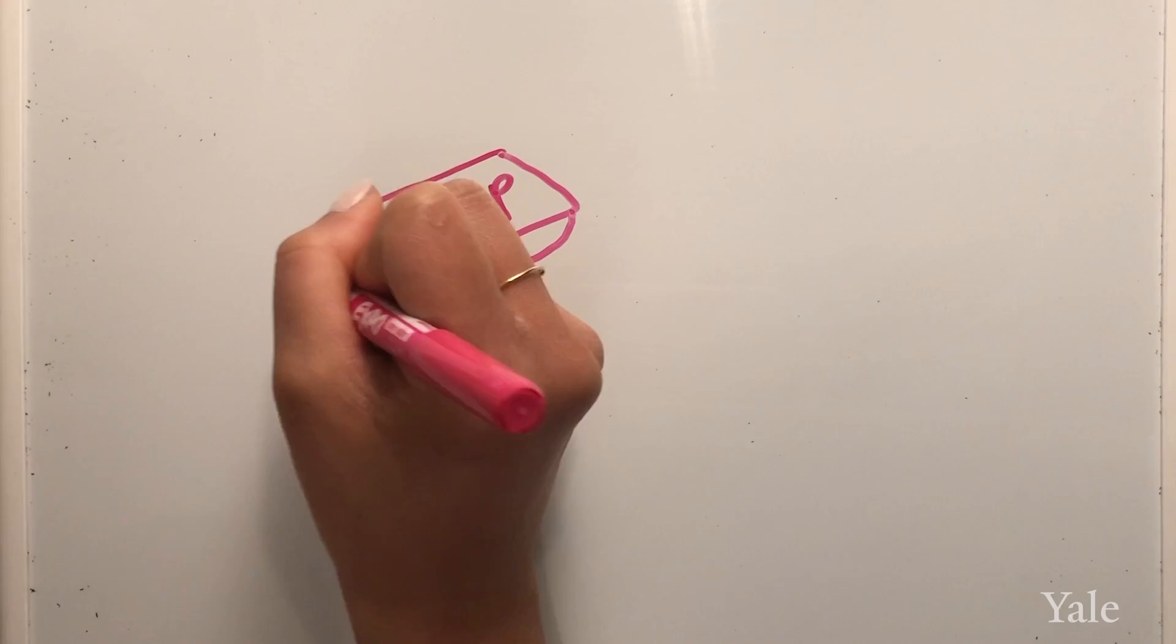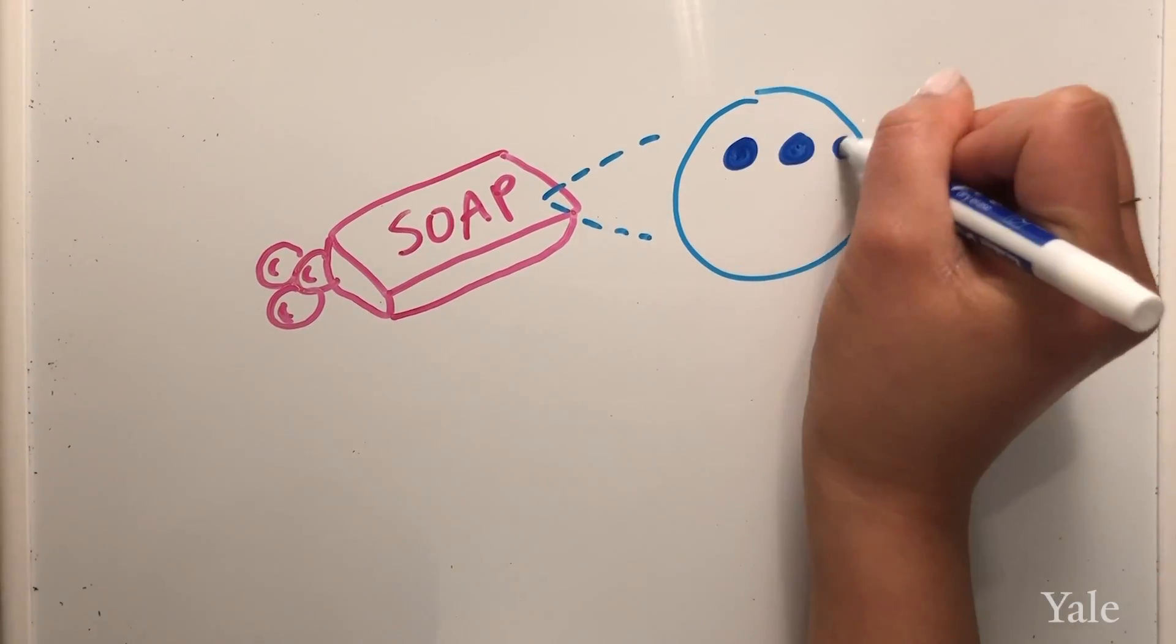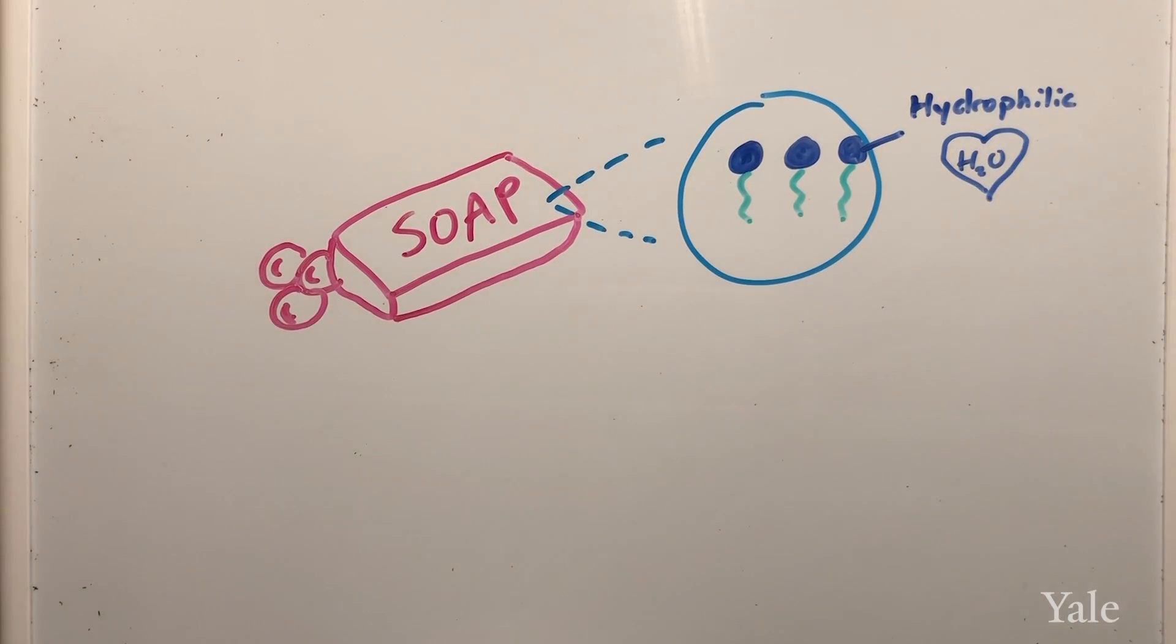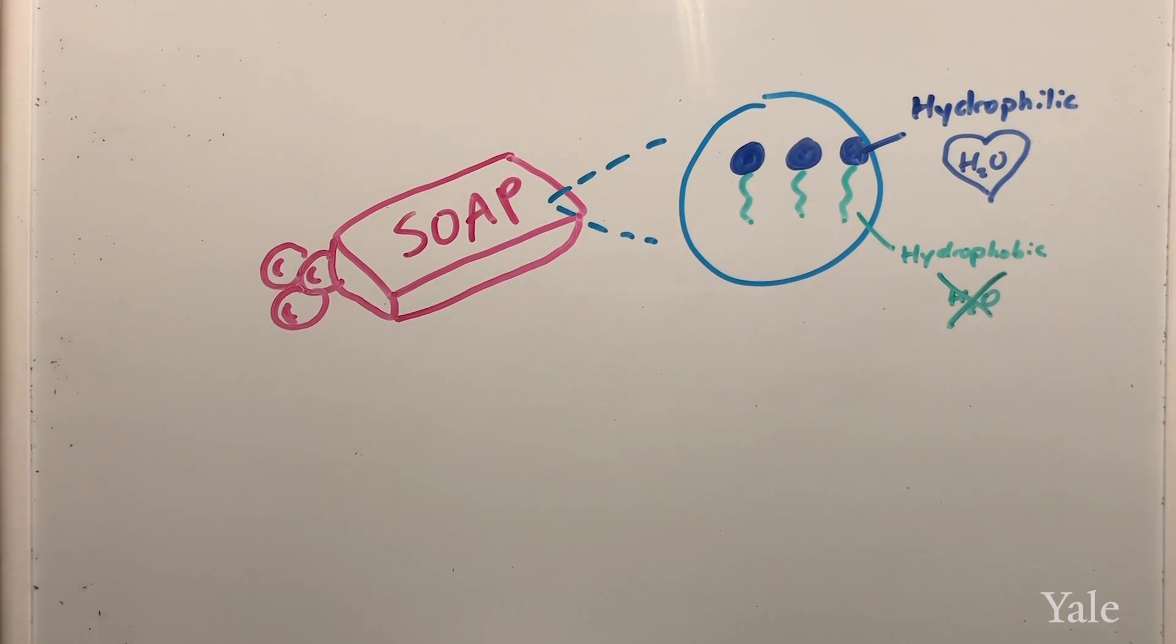Soap may seem too simple to work against such a tough virus but it actually does. Soap has molecules that have a hydrophilic head meaning it's attracted to water and a hydrophobic tail that's repelled by water and attracted to oil.